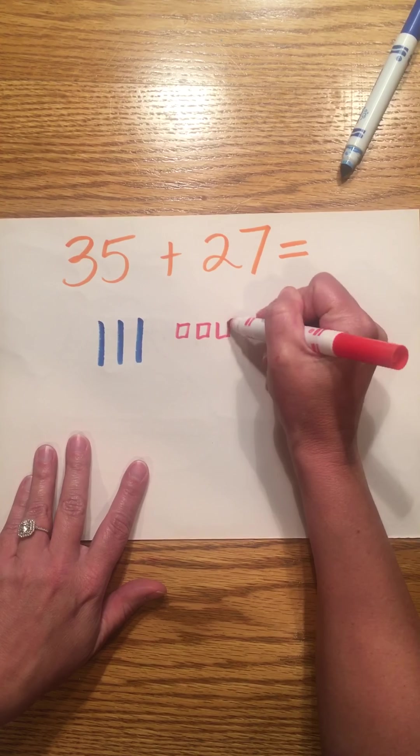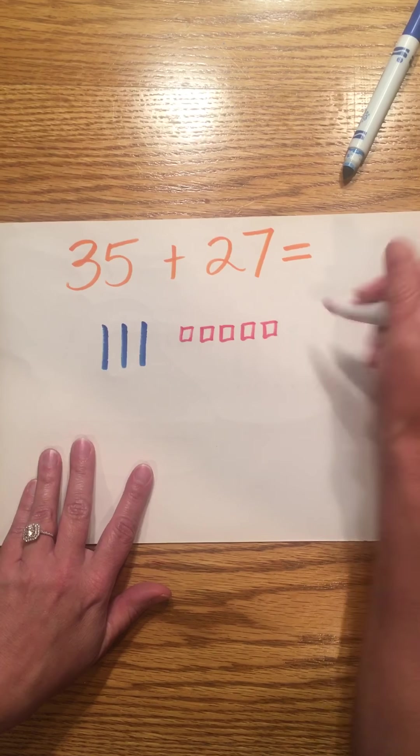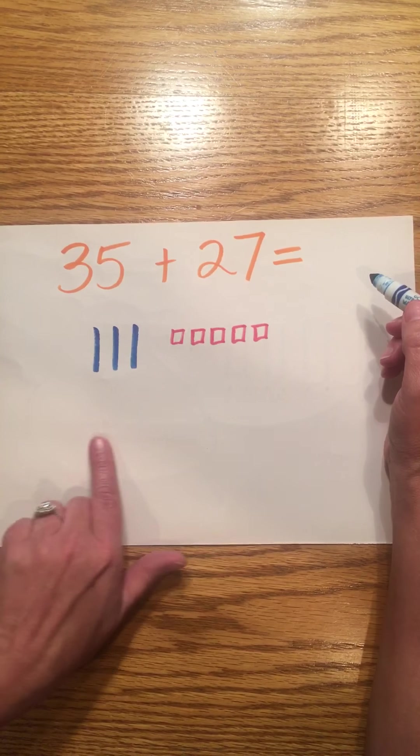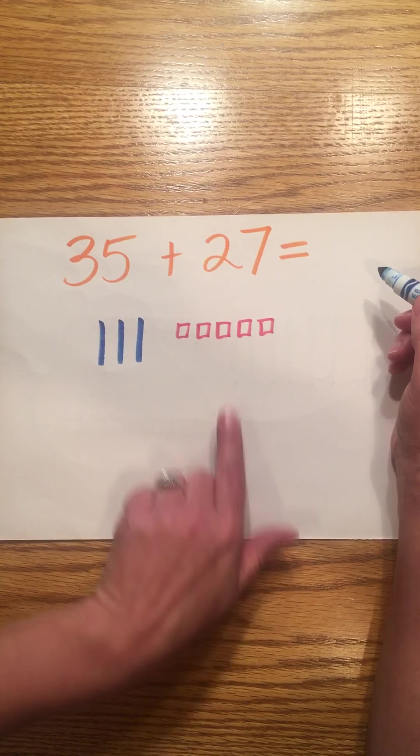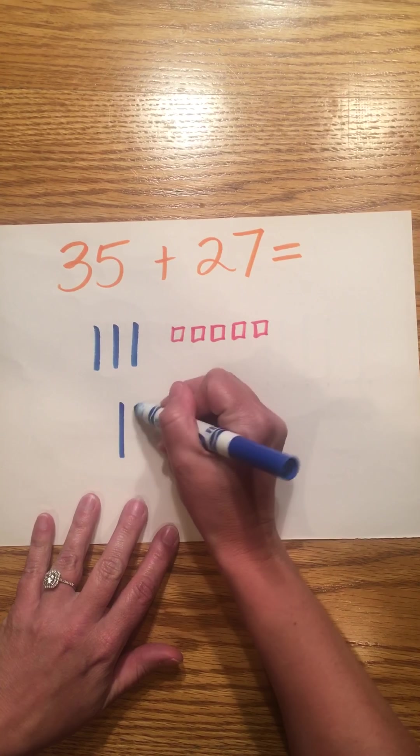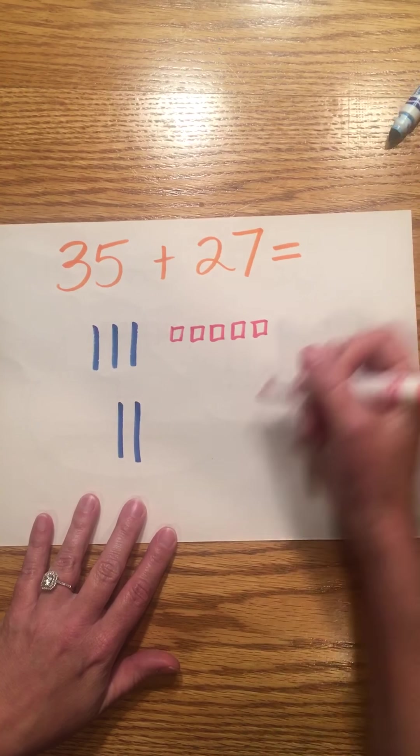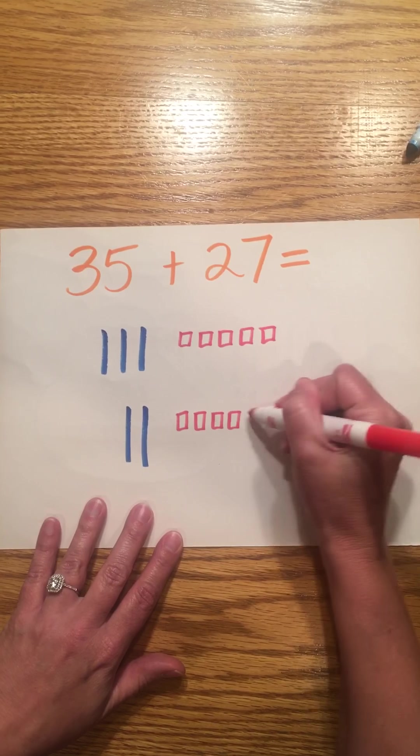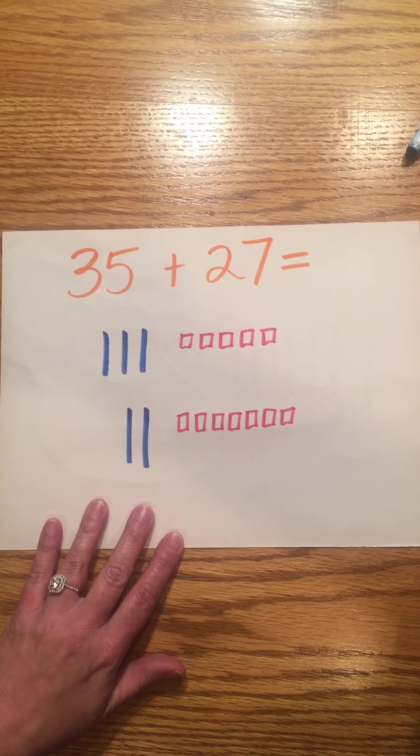One, two, three, four, five. When I'm adding the second number, 27, I'm going to go to the next line. So 27 has two tens and it has seven ones. One, two, three, four, five, six, seven.